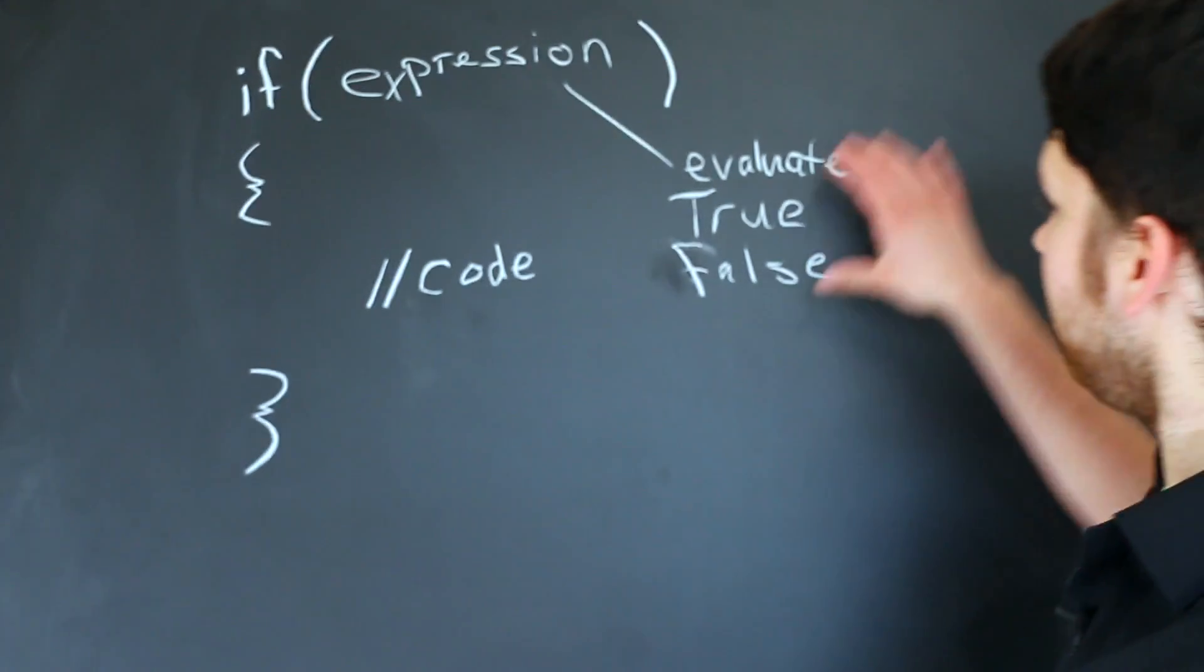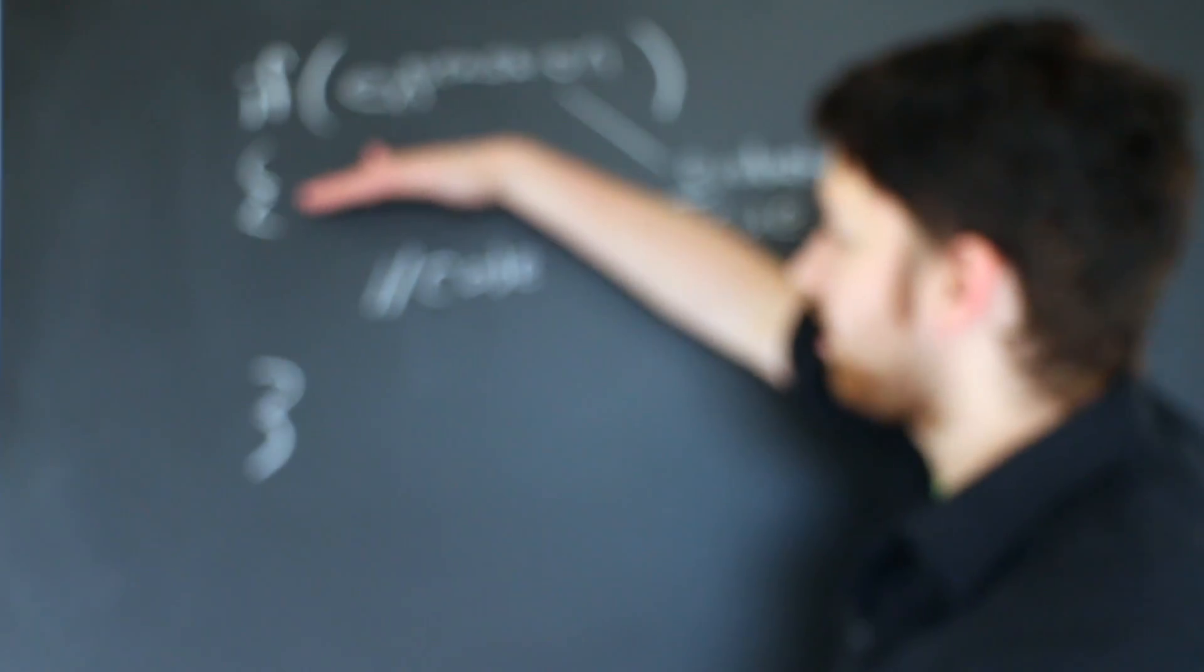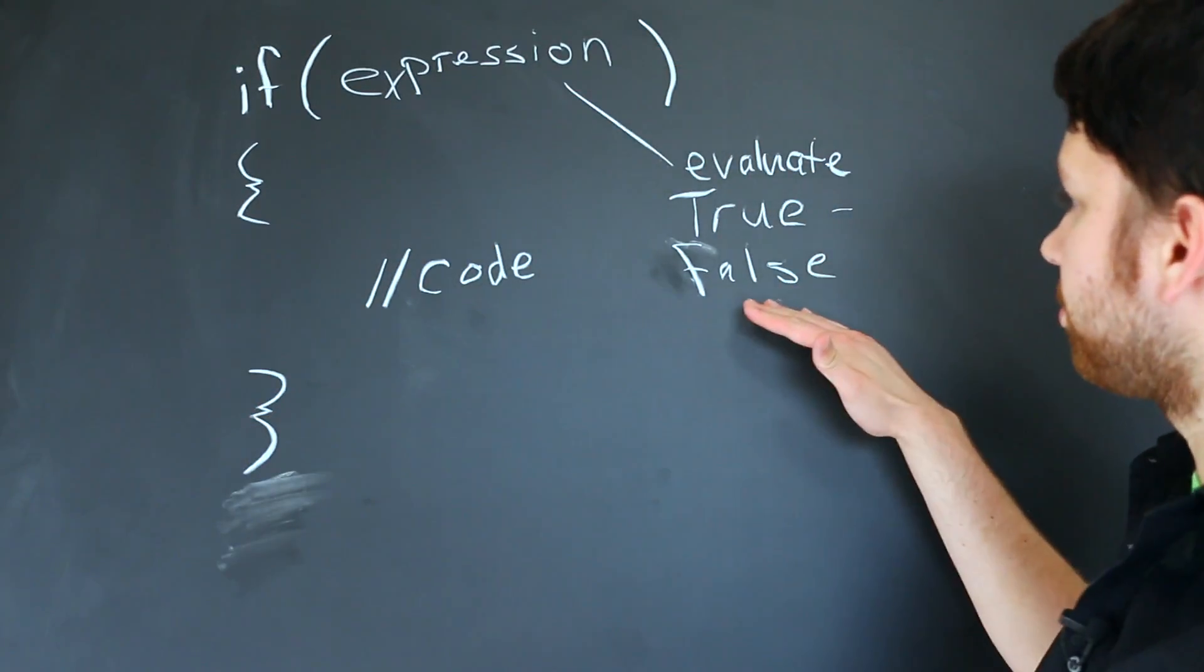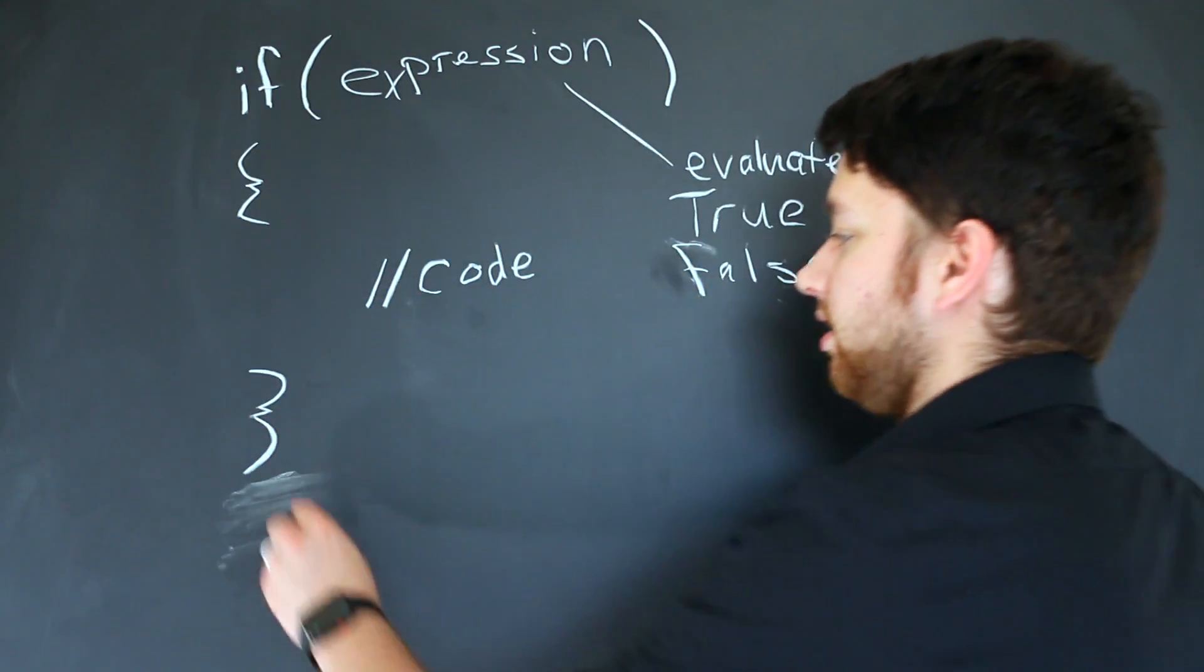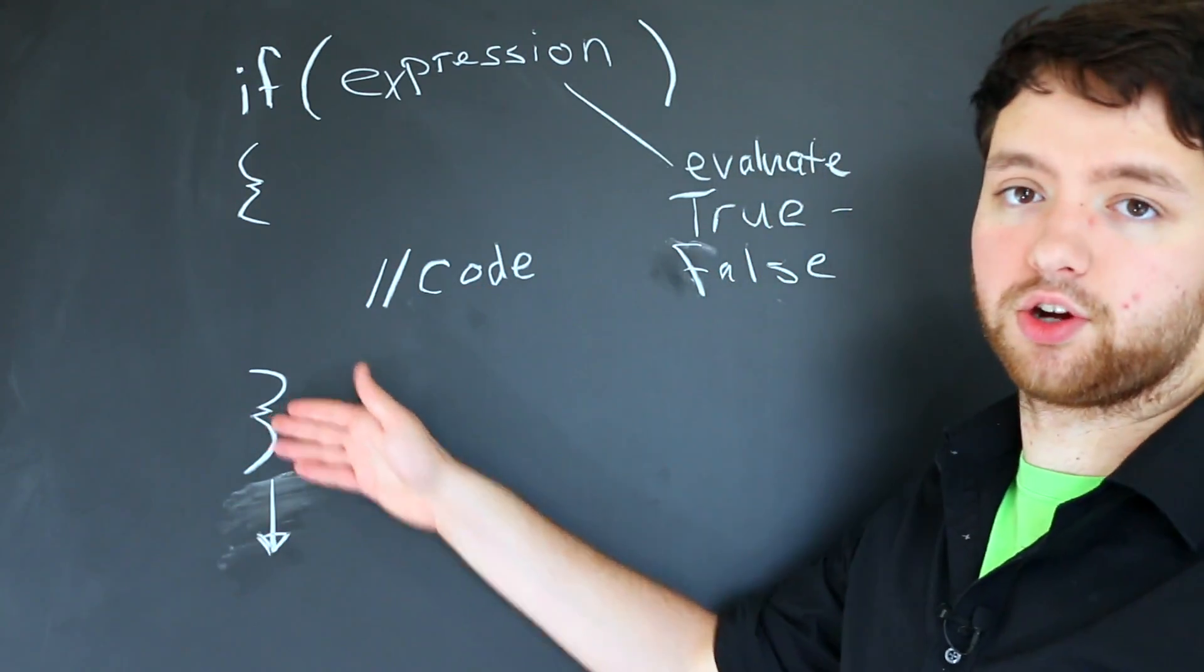If the expression evaluates to true, we are going to execute everything within these curly braces. If it's evaluated to false, we are going to skip these curly braces and continue the evaluation of the code beyond these curly braces.